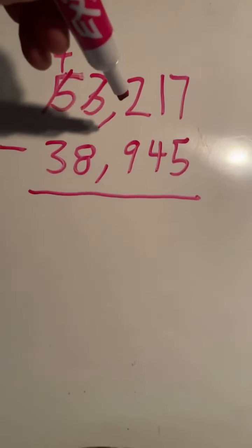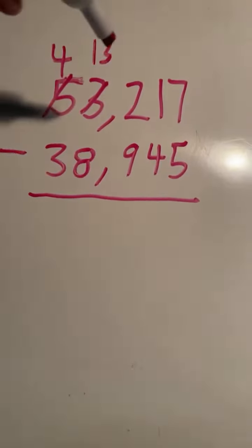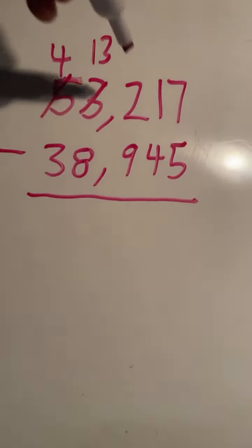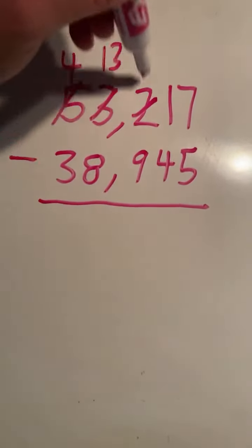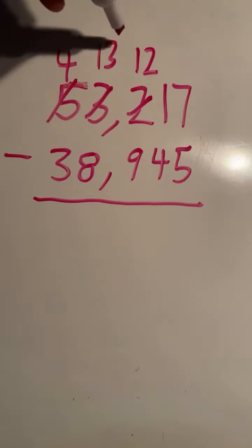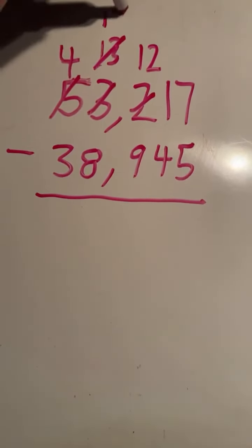All right, in the hundreds place, you can't have 2 and take away 9. You can't subtract 9 from 2. So we have to regroup again. The 2 is going to become a 12. And then the 13, we're going to take away 1. That's going to become a 12.